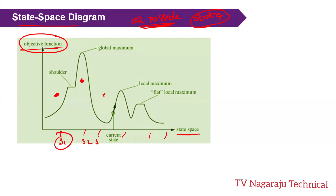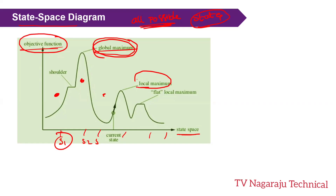The global maximum is the state where the objective function reaches its maximum value across the entire state space — it is the best among all states. A local maximum is also a peak, but it is only better than its immediate neighbors, not the best overall.